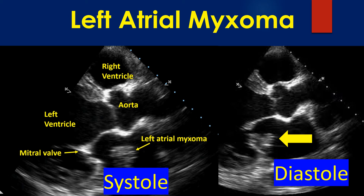Myxomas can occur rarely in the right atrium also. Right atrial myxomas are rarer than left atrial myxomas. Myxomas can occur in the right ventricle and the left ventricle very rarely. Sometimes myxomas can be familial.